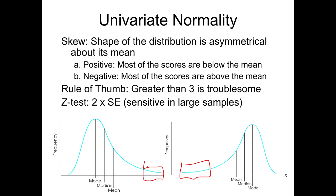I've seen different rules in different places. This is listed in Tabachnik and Fidel. Another test we can do is a Z test. If we look at that number in SPSS and the standard error of that number, we can take two times that standard error to create a 95% confidence interval. If zero is in that confidence interval, we would say it's not significantly skewed. So if we add and subtract two times the standard error to our estimate of skewness, we get essentially a test of skewness.